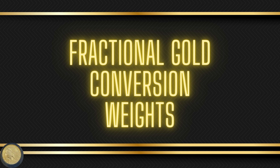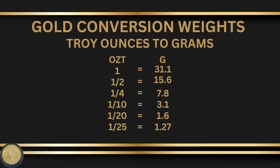In this video I will help you figure out the conversion of these weights. So, to convert gold from troy ounces to grams — say if you're at your LCS and they have their weights in troy ounces but you use grams, this is how you figure it out: one troy ounce equals 31.1 grams.